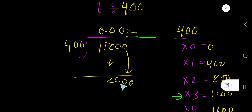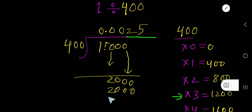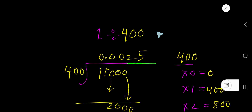400 goes into 2000 five times. 5 times 400 is 2000. So our result is 0.0025.